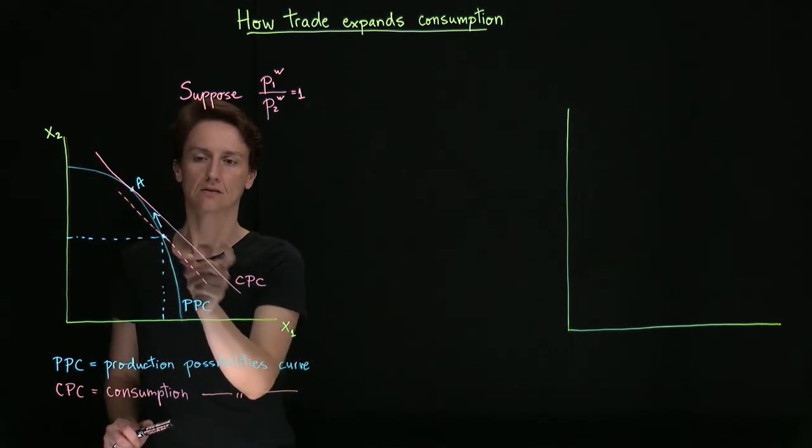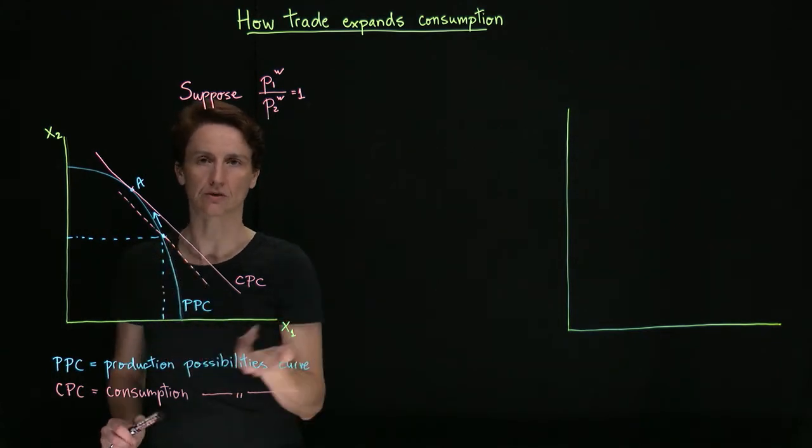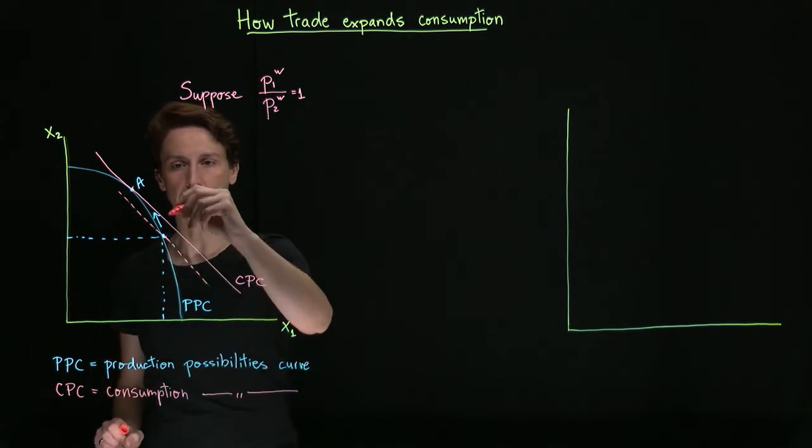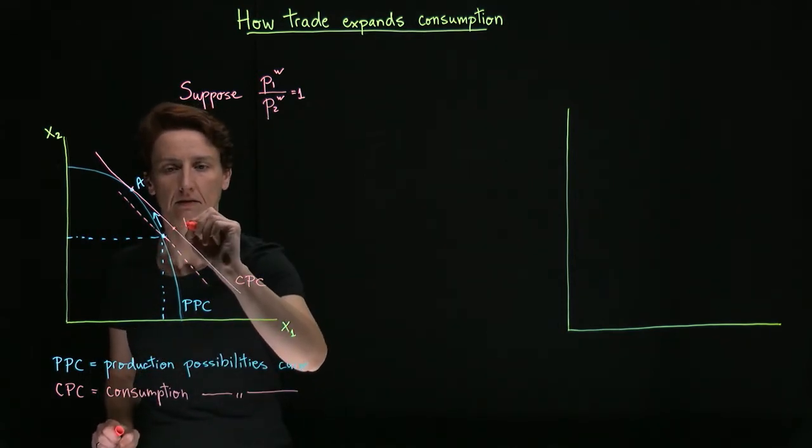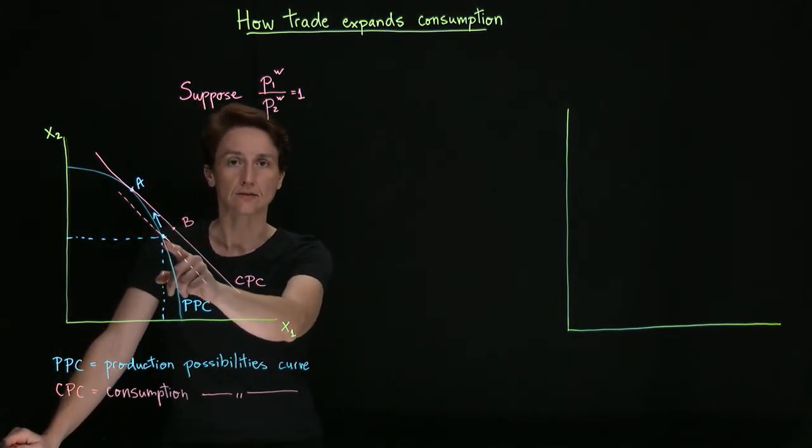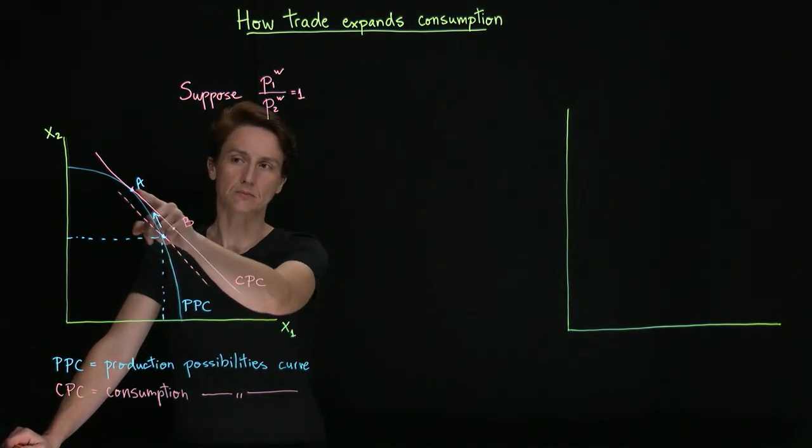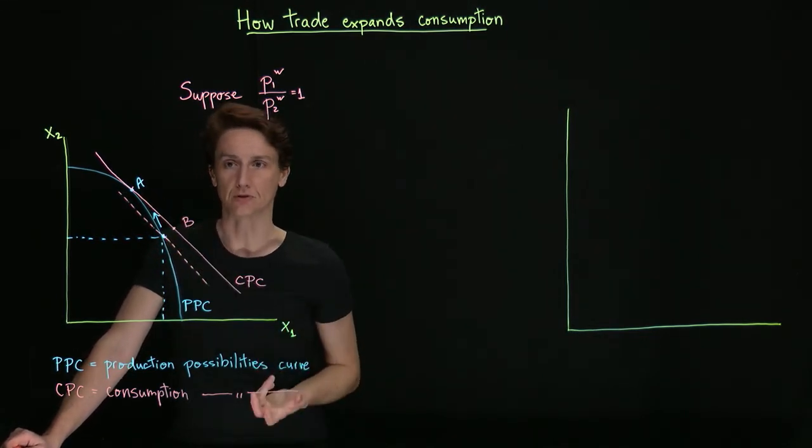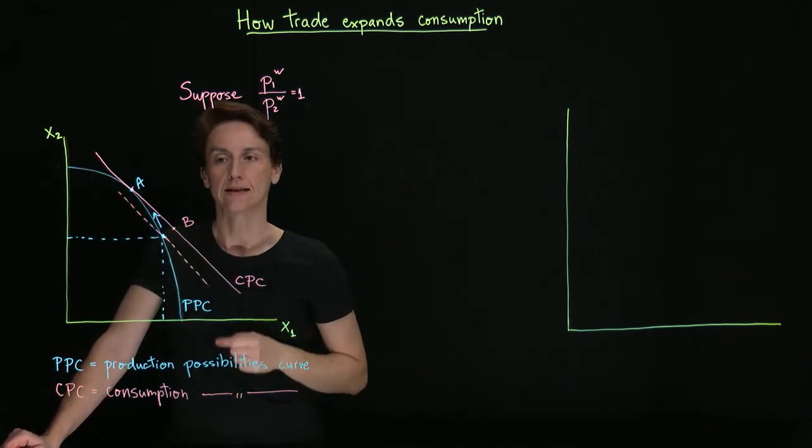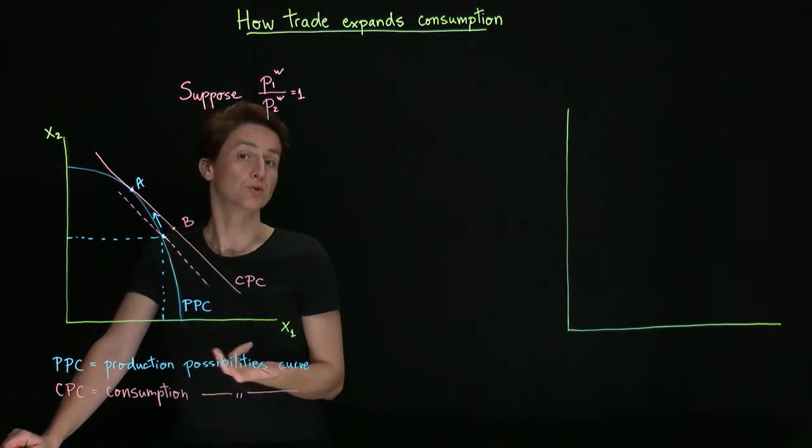So if this country continues to want to consume roughly equal amounts of the two goods, then their consumption point will be somewhere in this area, let's say here. And so what access to trade has done is, first, it changed the mix of inputs the country produces. So they've shifted towards making much more of good two and less of good one. And it allowed the country to expand consumption of both goods.